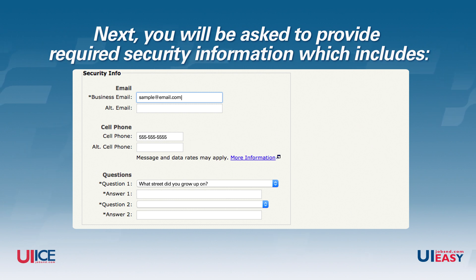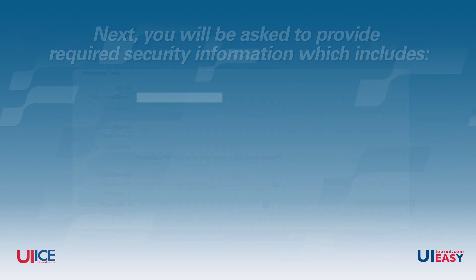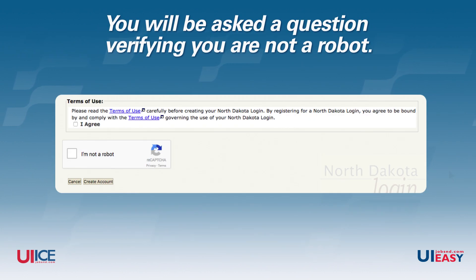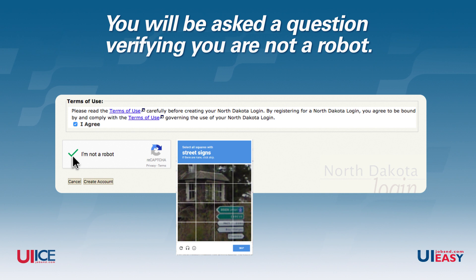Providing your cell phone number is strictly to receive the verification code and is not used for any other purpose. After completing the security questions, you'll be asked a question verifying you are not a robot. For example, you may be shown a picture and asked to click on the tiles that contain street signs.